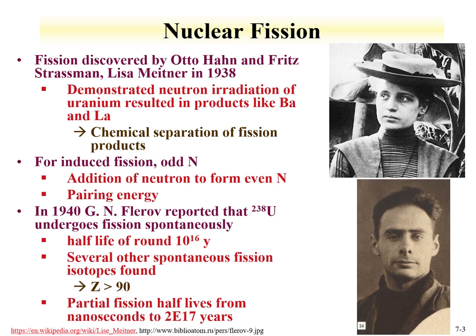Nuclear fission was discovered by Otto Hahn, Fritz Strassmann, and Lise Meitner back in 1938. It demonstrated that neutron irradiation of uranium resulted in lower elements such as barium and lanthanum. They were able to perform chemical separation and show that these fission products were indeed lower elements. They were able to induce fission in uranium due to the odd number of neutrons — when uranium-235 absorbed a neutron, that neutron paired with the unpaired neutron in the nucleus, and that pairing energy wound up inducing fission.